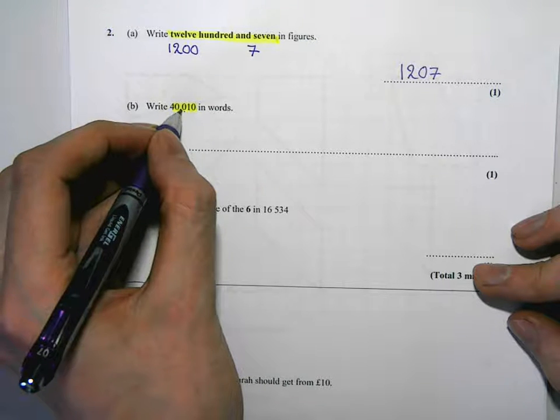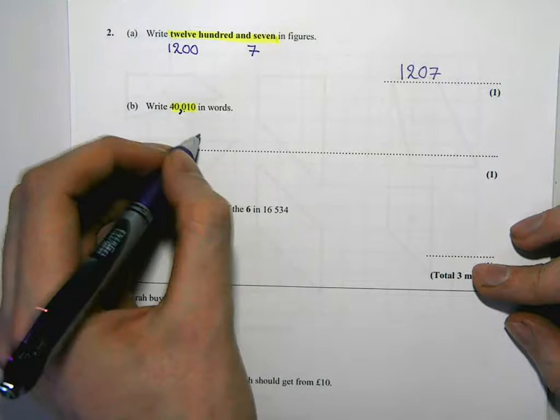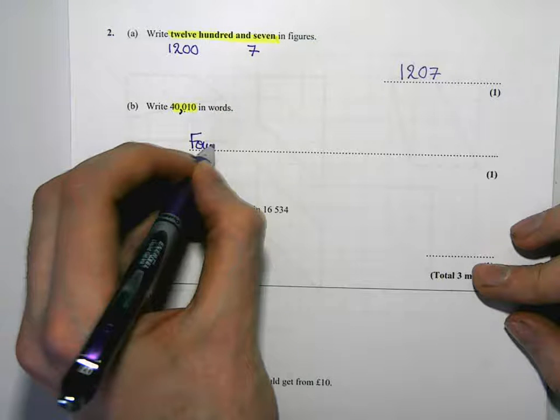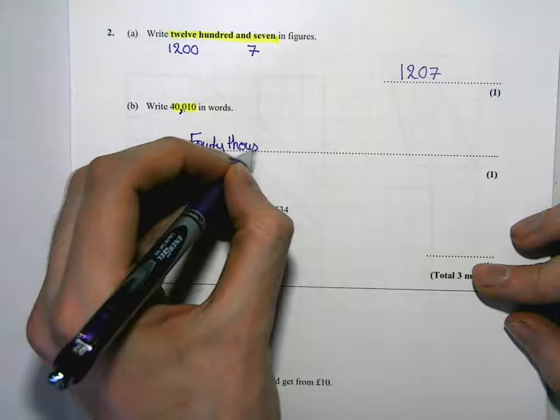So if you put a little comma here, I'll put a comma every three, that tells us that's 40,000 so we can write that in words. Forty thousand.